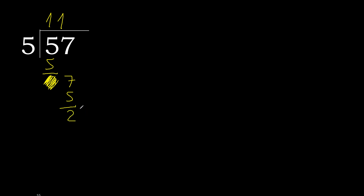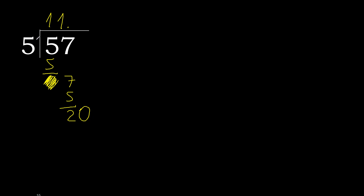That is not a whole number, therefore always complete with 0 — here with a point. 0 point. 20: 5 multiplied by 4 is 20. 20 minus 20 is 0, therefore finish it.